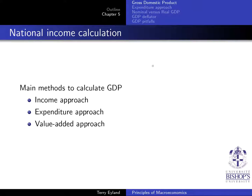There are different measures to calculate gross domestic product: the income approach, the expenditure approach, and the value-added approach. We'll see that they all calculate the same thing, but the one we're really going to focus on in this class — the simplest one — is the expenditure approach.